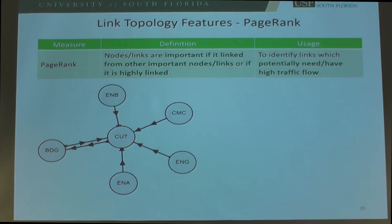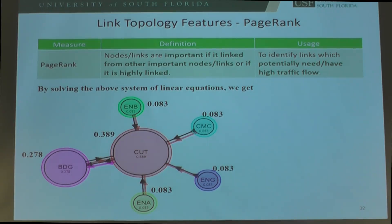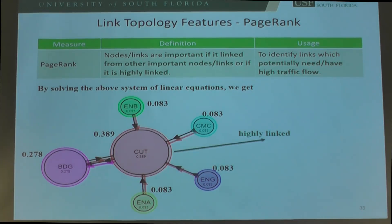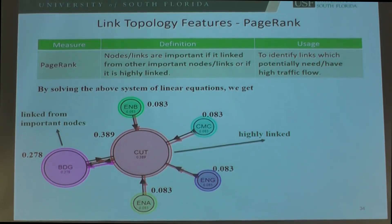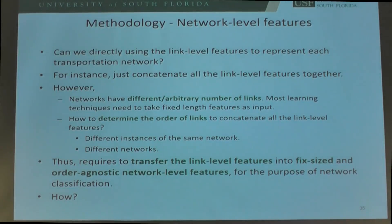For this PageRank example, I created a small network with nodes including ENB, ENG, ENA, CMC, and BDG (the parking building), with directed links. Using PageRank, the cutter node is the most important because all other nodes link to it, and the parking building is second because it gets links from important nodes. After obtaining all link-level features, directly building a model by concatenating them faces problems: transportation networks can have an arbitrary number of links, and different networks have different numbers.